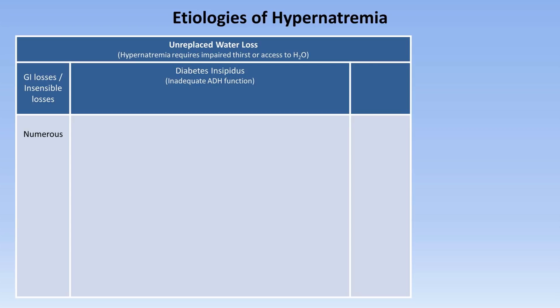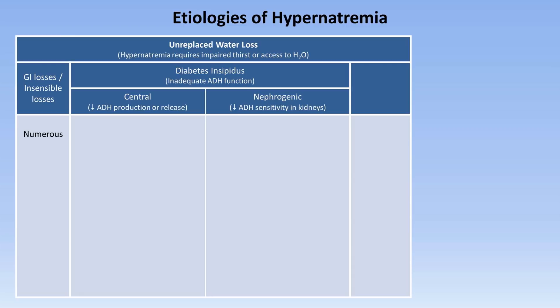The two general forms of diabetes insipidus, or DI, are central DI, in which ADH production or release is reduced, and nephrogenic DI, in which the kidneys are inadequately sensitive to ADH.